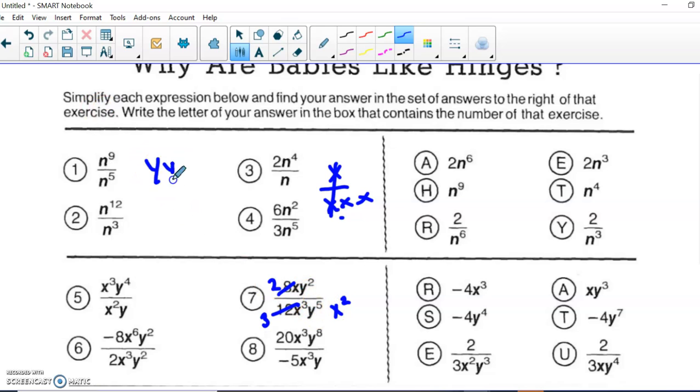Now y's, it looks like we have 2 y's on the top and 5 y's on the bottom. So I can cancel 2 of those y's out and it looks like I'm left with 3 y's on the bottom.